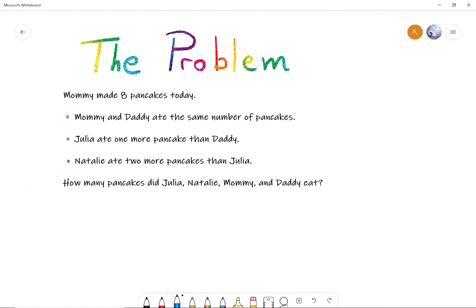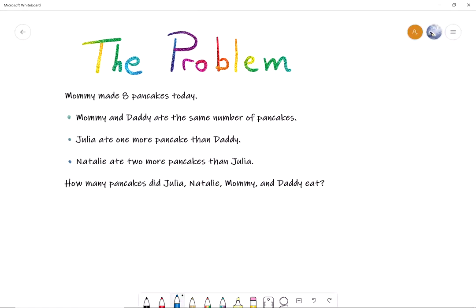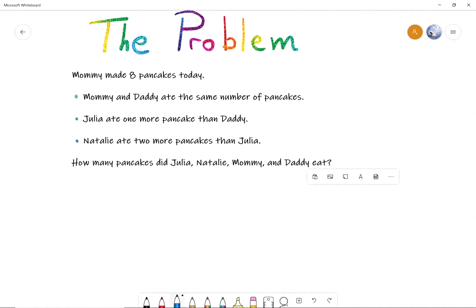Julia, do you want to read the problem? Mommy made eight pancakes today. Mommy and Daddy ate the same number of pancakes. Julia ate one more pancake than Daddy. Natalie ate two more pancakes than Julia. How many pancakes did Julia, Natalie, Mommy, and Daddy eat? So yeah, so this is the problem. Very good Julia.